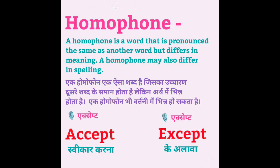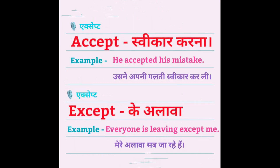For example, accept and except. Accept means savikar karna — he accepted his mistake. Accept ke alawa, example: everyone is living except me. Mere alawa sab ja raha hai.